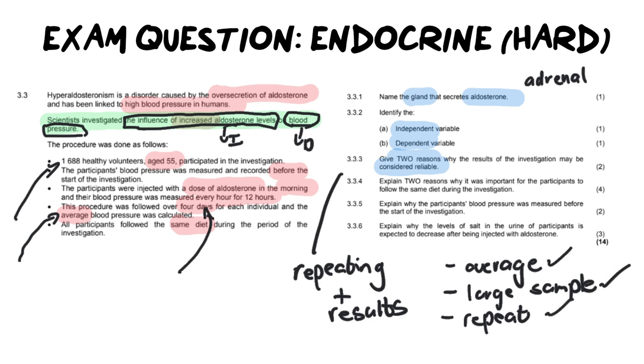Now that means that you could give any two of these, but please keep in mind that when you do give the answer, you need to give it in context of the work. So please don't just say they used a large sample size. No, rather write out the real reason being they used 1,688 people, which is a large sample size. Like write that out in a full sentence. Likewise for calculating the average or repeating, say something like they conducted the experiment over four days and they calculated an average. That is what I would want you to say. A nice full sentence. No generic answers please.